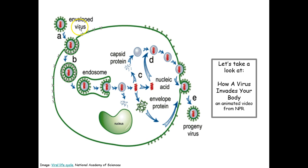Now the virus attaches to a brand new host cell. That new cell says 'you're friendly because you've got all the sugars that tell me you're this type of cell and you belong in me,' so it allows the virus to attach. Then the whole process starts again and again and again.